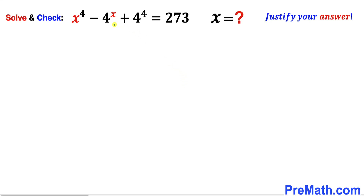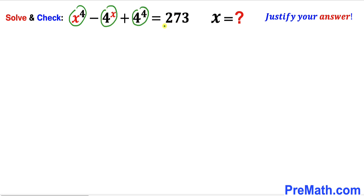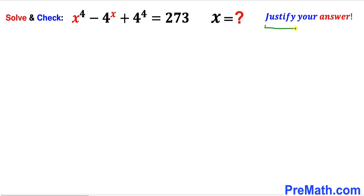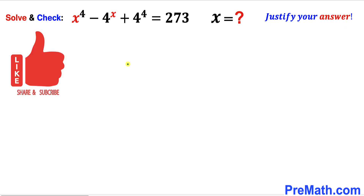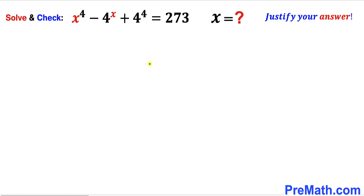Welcome to Pre-Math. In this video we have got this interesting exponential equation. We are going to solve this given exponential equation: x power 4 minus 4 power x plus 4 power 4 equals to 273. We are going to solve for x values, check for any extraneous solutions, and justify our answer. Let's go ahead and get started.